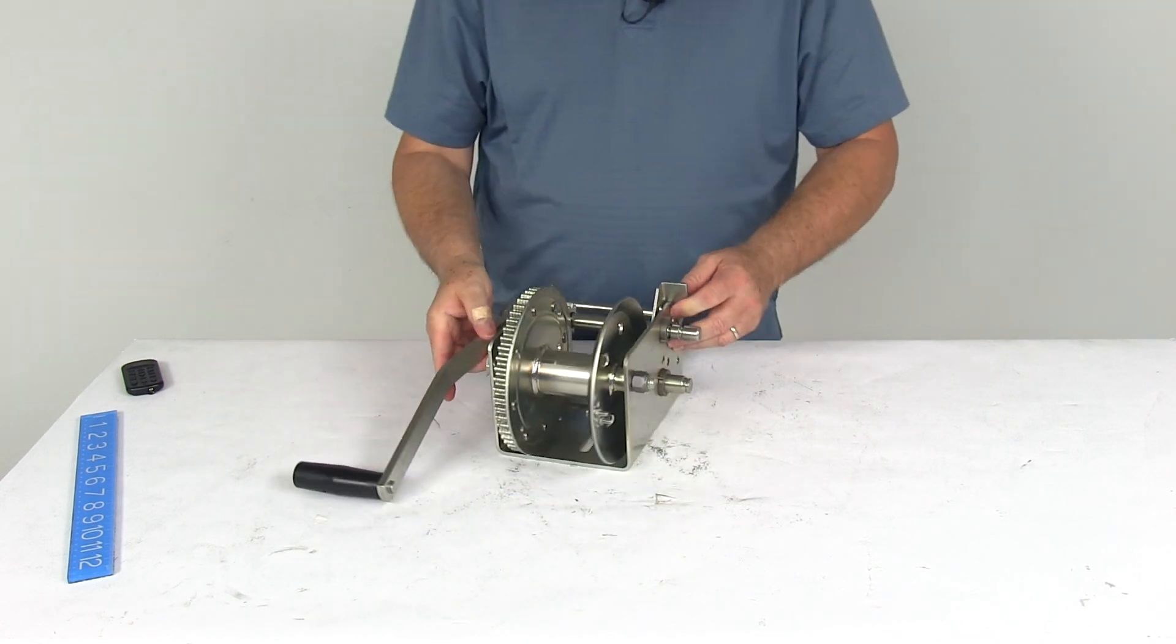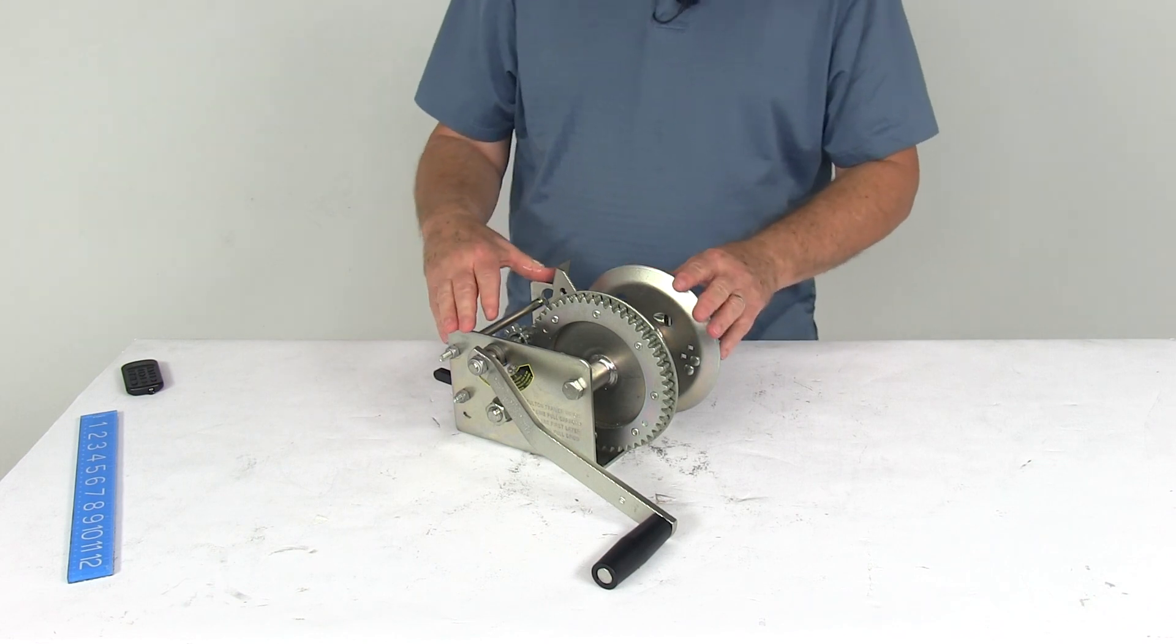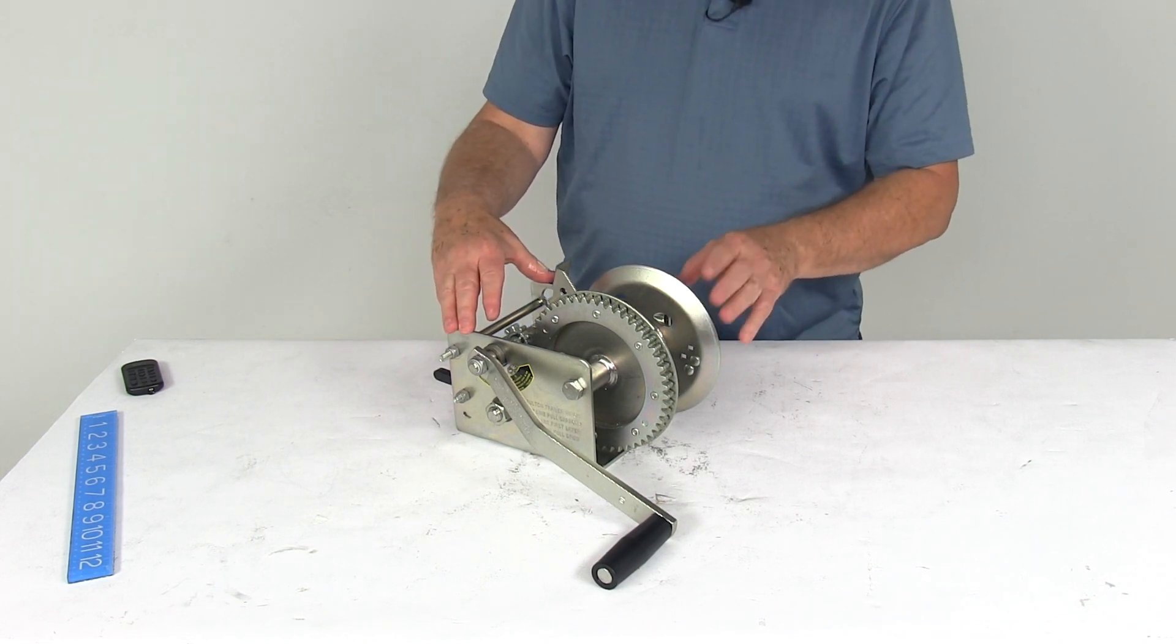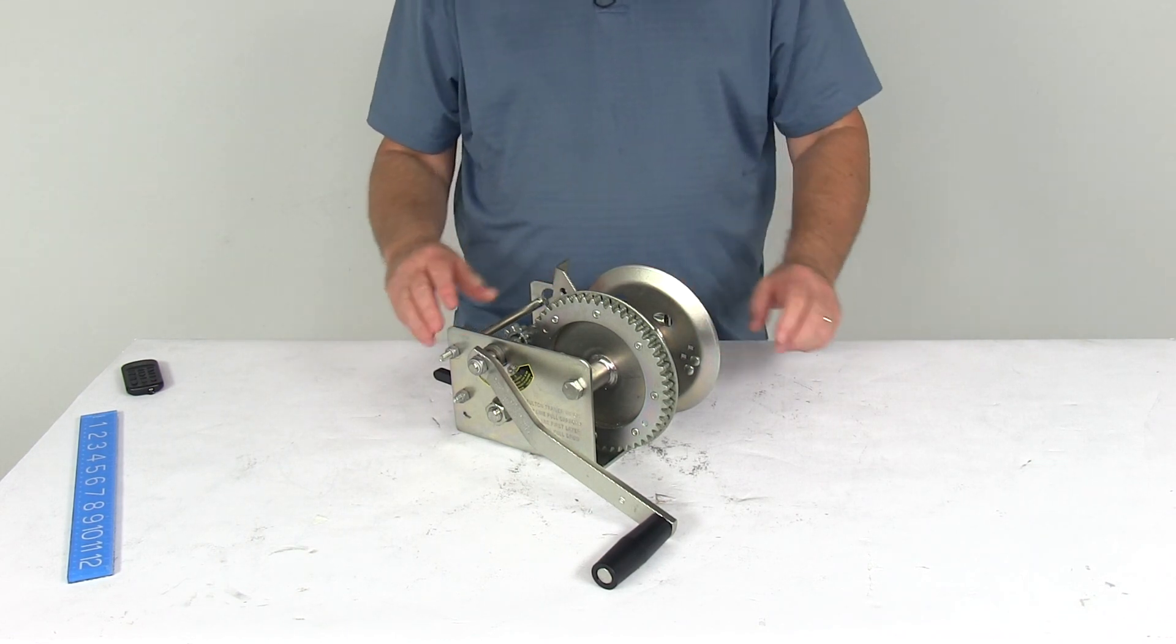But that should do it for the review on the Fulton high-performance two-speed trailer winch for cable only with a 3,200 pound weight capacity.